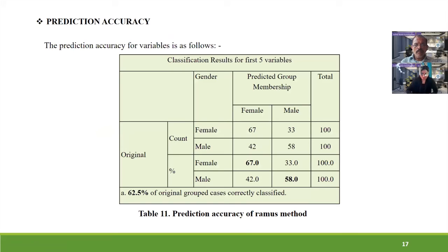The prediction accuracy was also calculated. Out of 100, 67% of female samples were accurately classified, and 58 out of 100 male samples were accurately classified. In total, 62.5% of the original grouped cases were correctly classified.